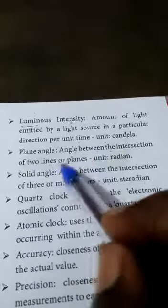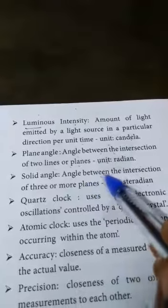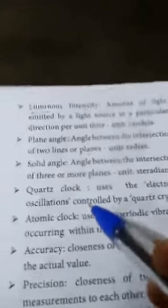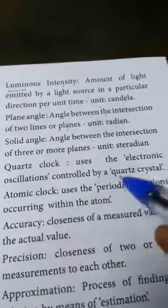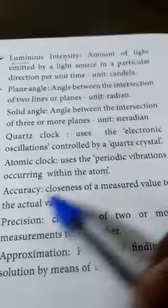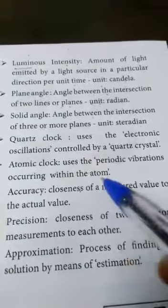Plane angle: angle between the intersection of two lines or planes, unit is radian. Solid angle: angle between the intersection of three or more planes, unit is steradian. Electronic oscillation controlled by quartz crystal. Atomic clock: it uses the periodic vibration occurring within the atom.